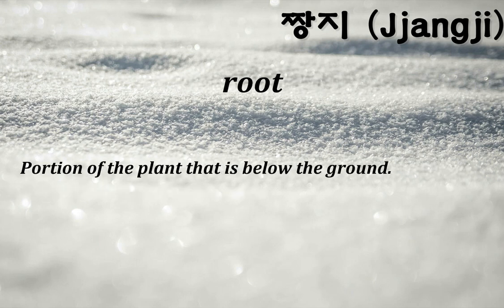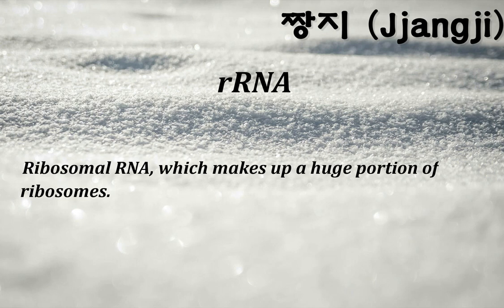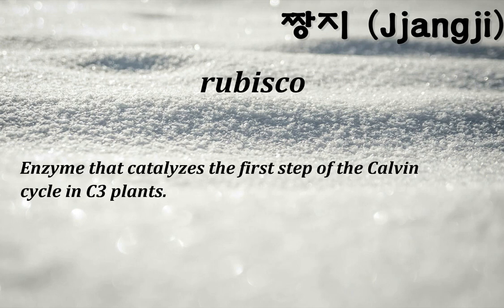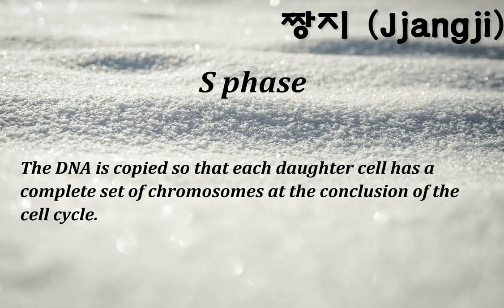Root: portion of the plant that is below the ground. rRNA: ribosomal RNA, which makes up a huge portion of ribosomes. Rubisco: enzyme that catalyzes the first step of the Calvin cycle in C3 plants. S-phase: the DNA is copied so that each daughter cell has a complete set of chromosomes at the conclusion of the cell cycle.